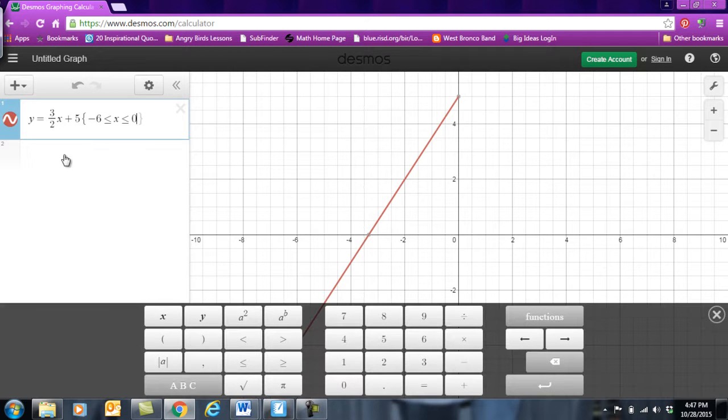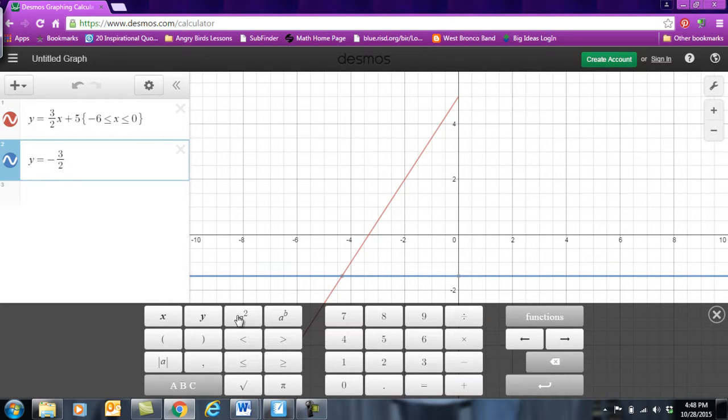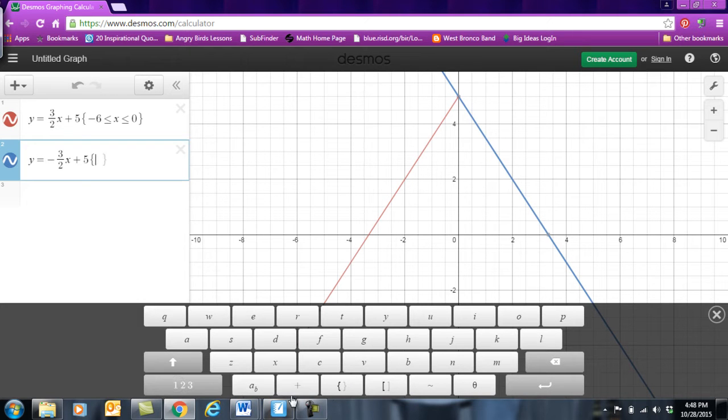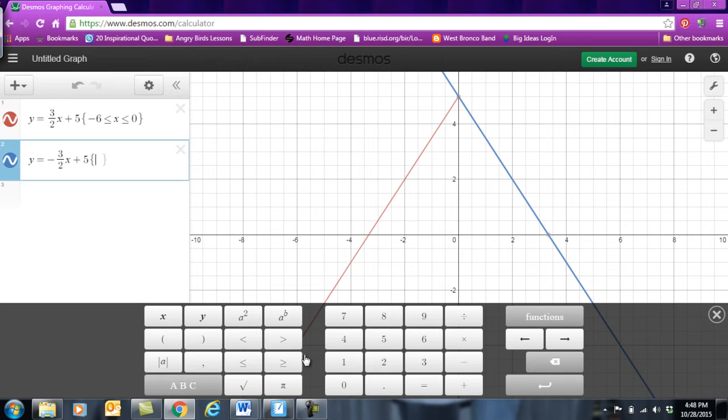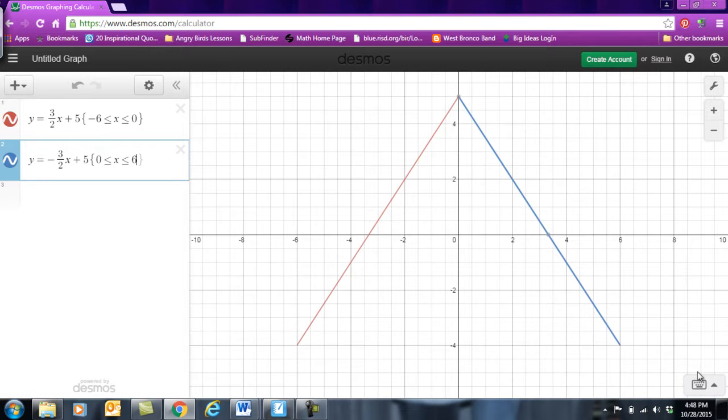So I'll go back into here. We're going to add an equation. So our next one was y = -3/2x + 5. So I'm going to do a negative 3 divided by 2. Arrow out of that fraction. x plus 5. And I'm going to have to set my domain restrictions. So ABC and we'll put the little squiggly. And this one went from 0 to 6. So I'm going to go 0 ≤ x ≤ 6. And so there's the rest of my triangle, the other side.